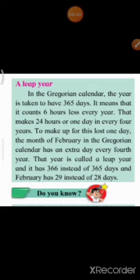To make up for this lost one day, the month of February in the Gregorian calendar has an extra day every fourth year. That year is called a leap year, and it has 366 instead of 365 days. In that year, February has 29 days instead of 28 days.